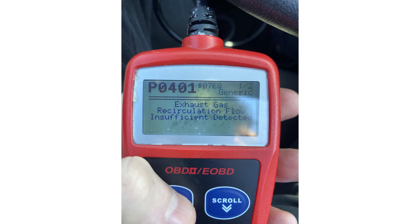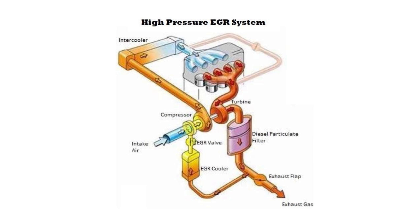A P0401 code is going to read 'exhaust gas recirculation flow insufficient detected,' or something very similar to that. EGR, or exhaust gas recirculation, is an emission system that takes exhaust gases and passes them back into the engine to re-burn all of the harmful particulates left over from the combustion process before sending that gas out through the exhaust system. The whole purpose is to reduce nitrogen oxide and lower emissions.